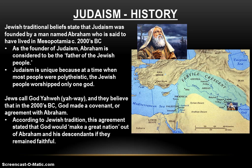Jews call God Yahweh. Interestingly, the God that Jewish people call Yahweh is the same God that Christians call God and the same God that Muslims call Allah. Jews believe that in the 2000s BC, God came to Abraham and made an agreement — a covenant — with him. According to Jewish tradition, this agreement stated that God would make a great nation out of Abraham and his descendants if they remained faithful to God. Abraham then left his home in the city of Ur, traveled the Fertile Crescent, and moved to the land God promised to give to him and his descendants — the land of Canaan, or what is today the present-day country of Israel.